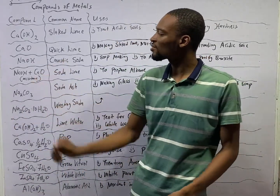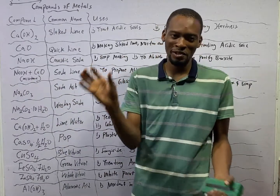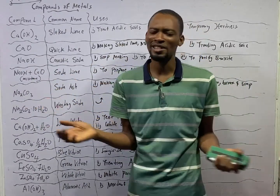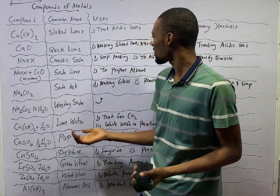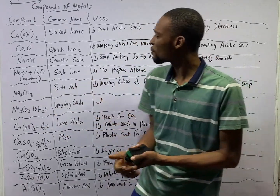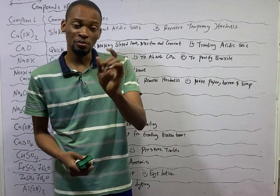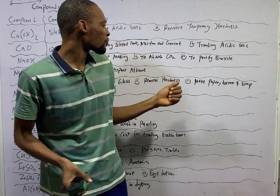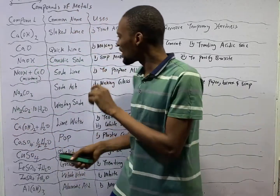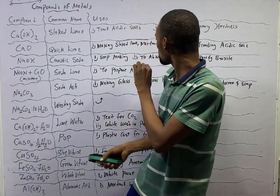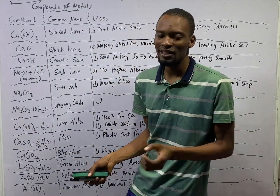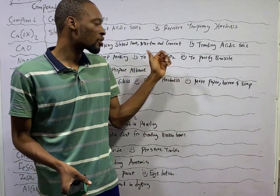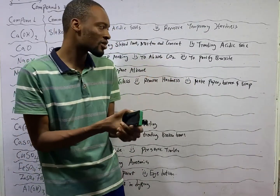Sodium hydroxide is referred to as caustic soda. When you hear caustic soda, know that we are referring to sodium hydroxide. Caustic soda is used for making strong soap, while calcium hydroxide is used for making soft soap. Sodium hydroxide is also used to absorb carbon dioxide — to remove carbon dioxide from air, we use caustic soda, which traps the carbon dioxide from air.